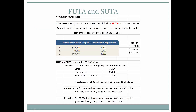Now for FUTA and SUTA: FUTA taxes are 0.8% and SUTA taxes are 2.9% of the first $7,000 paid to the employee. In Scenario A, gross pay through August was $6,400, and we're paying an additional $800 in September, bringing the total to $7,200 — which exceeds the $7,000 limit. So only $600 of the September pay will be subject to FUTA and SUTA taxes.